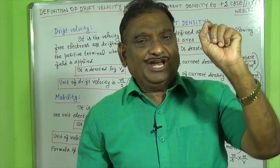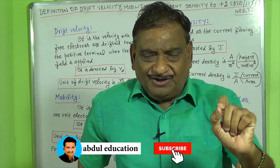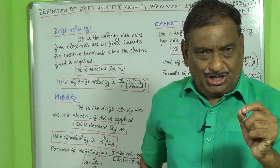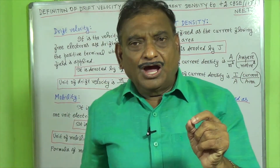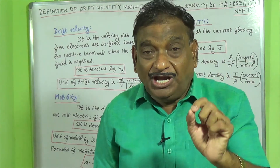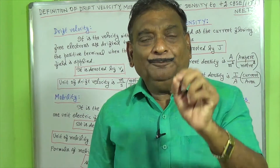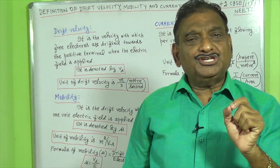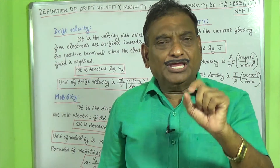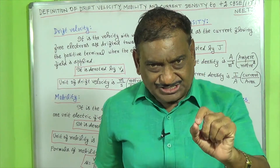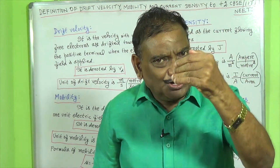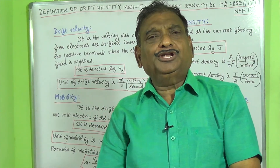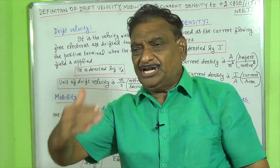Now we will see why the unit of mobility is meter square per volt second. The formula for mobility is drift velocity divided by electric field. The unit of drift velocity is meter per second.